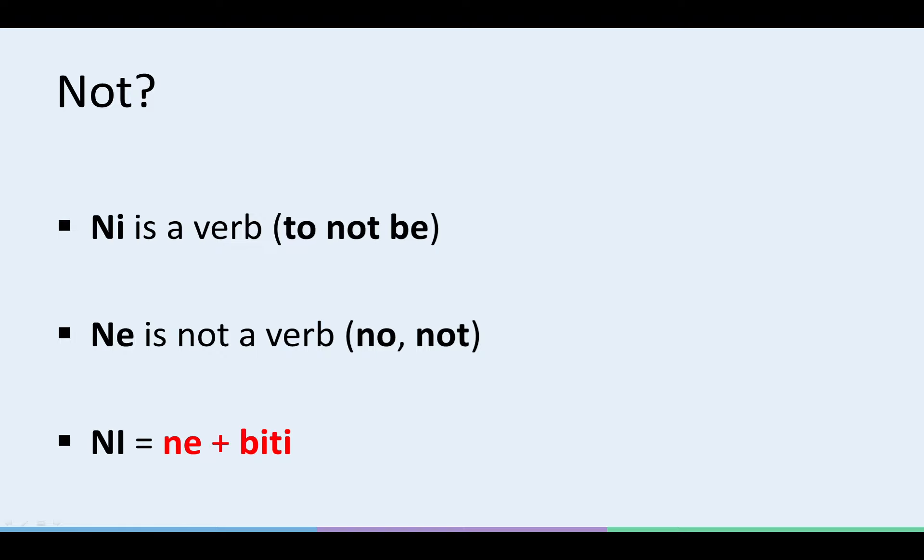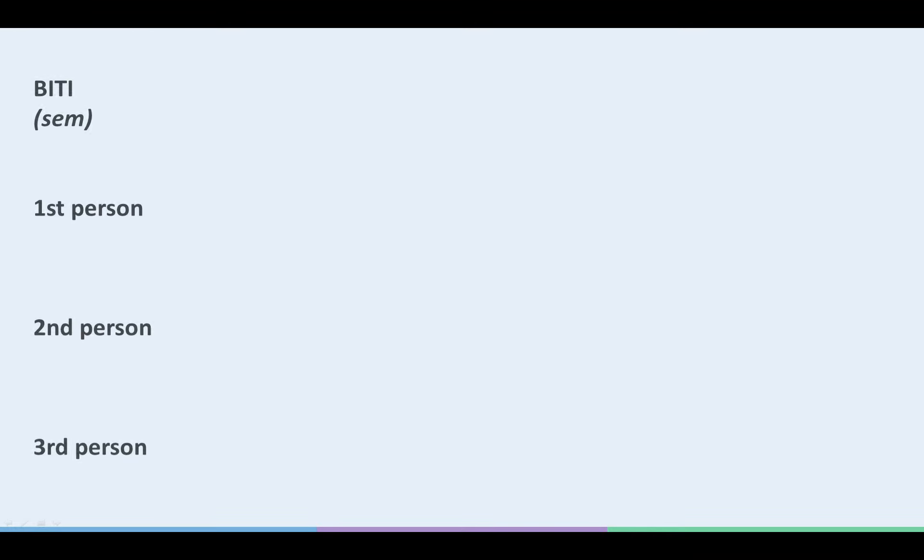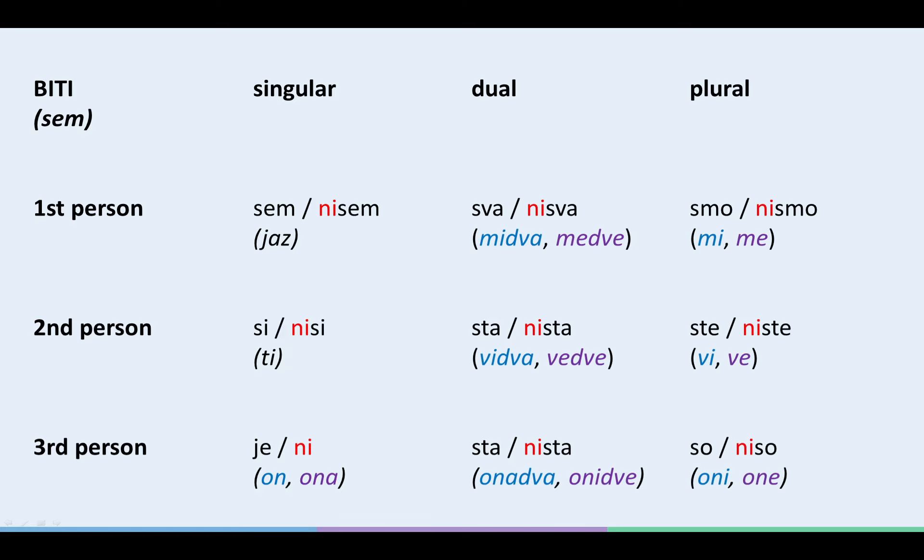Now let's show which form of TO BE exactly. Here's where NI fits into the whole picture. The verb TO BE or BITI in Slovene. So we have the singular, the dual, and the plural. So let's see if we can find NI. It's in one place only. There we go. NI is the third person singular of the verb TO BE or BITI.